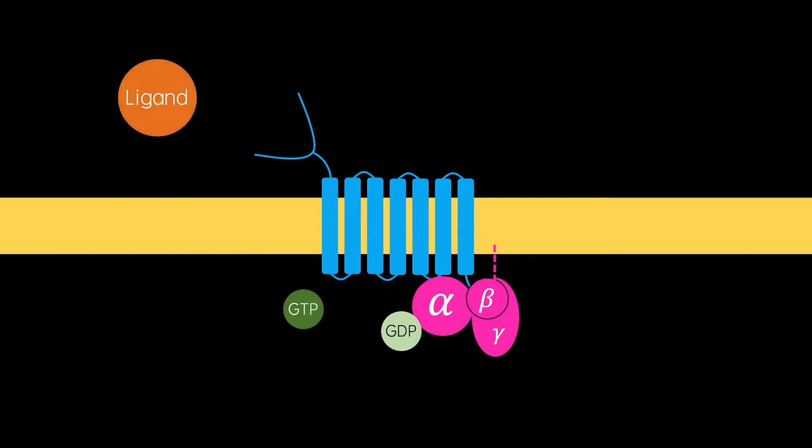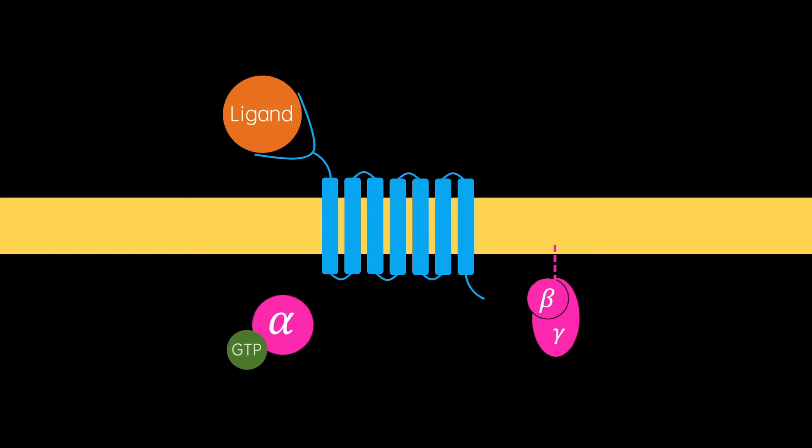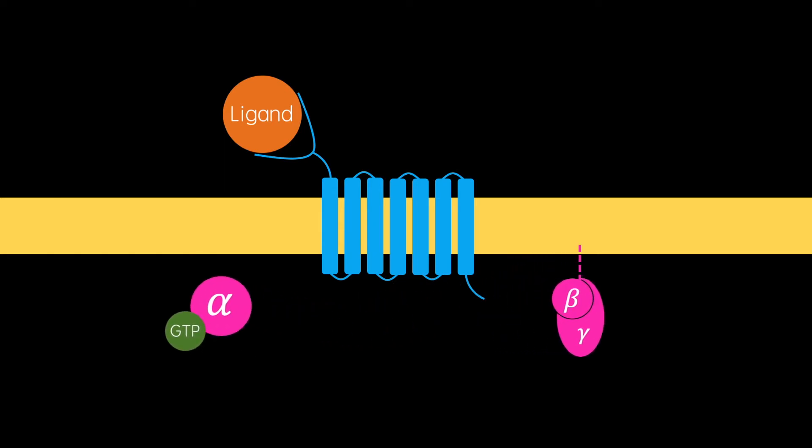When a ligand binds to and activates the G protein coupled receptor or GPCR, the alpha subunit exchanges its GDP molecule for a GTP molecule. This provides it with the energy it needs to dissociate and mediate a series of intracellular signaling cascades.